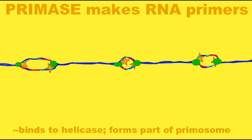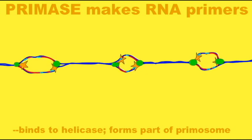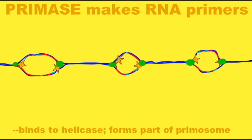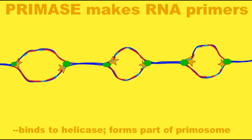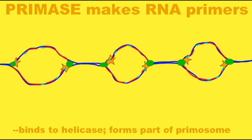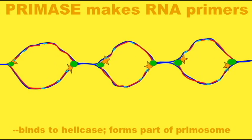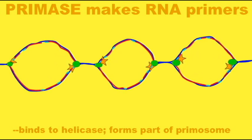So instead, an RNA primer must be created using an enzyme called primase. These short RNA primers will then be what DNA polymerase can add its nucleotides to. The leading strand begins with a single RNA primer.